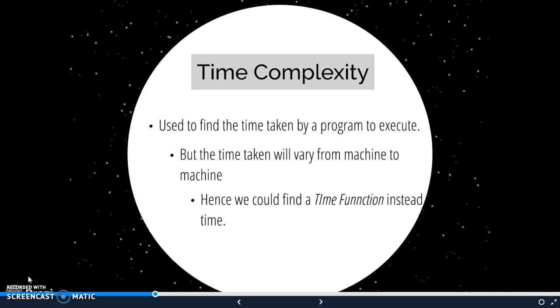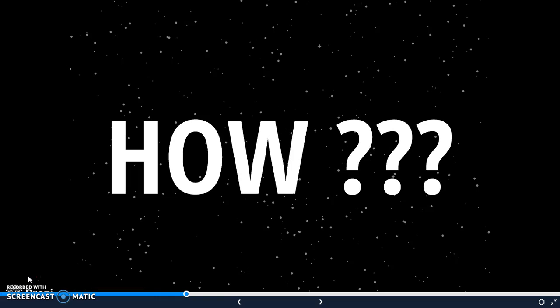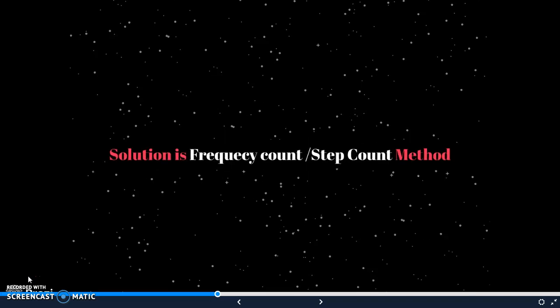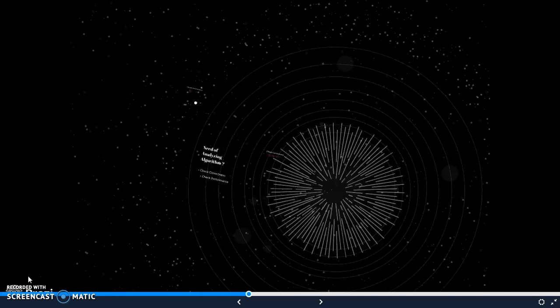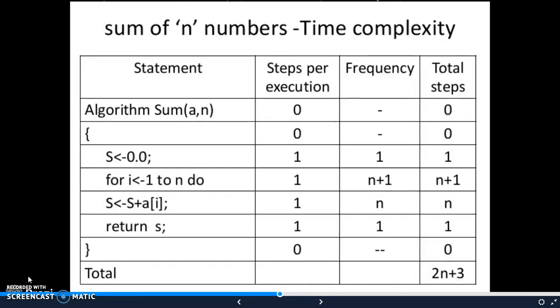So now comes the question: how can we find a time function from an algorithm? The solution is a method called frequency count or step count method. With the help of an example, we will see how this frequency count method works. Frequency count is nothing but it counts the number of statements executed in a program - how frequently or the number of times the statement is being executed.